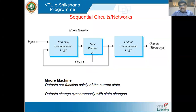Hello all, welcome back to Module 4 of Digital System Design. We are in the last part of Module 4. As I said, we will go ahead with the sequential circuits or networks. We have two types of sequential circuits: one is the Mealy sequential network and another is the Moore sequential network, simply called the Moore machine and the Mealy machine.